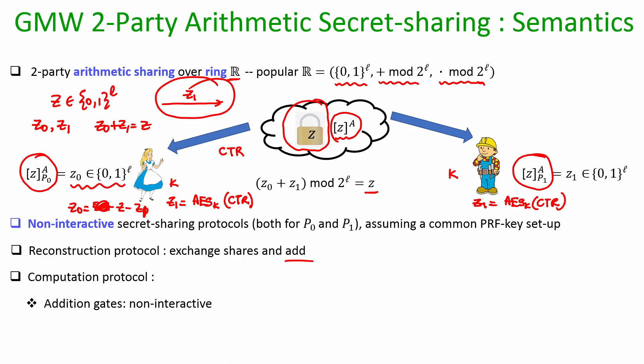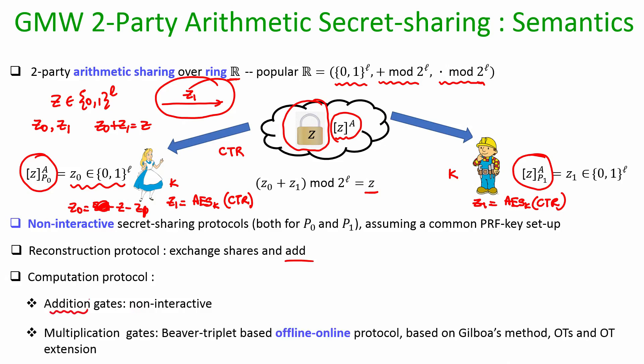For computation protocols in the arithmetic world: if there is an addition gate where the inputs are GMW arithmetic secret shared, to get the gate output in GMW arithmetic sharing the parties require no interaction — they just add their respective shares locally. Multiplication gates can be evaluated using the Beaver triple method in the offline-online paradigm, where triplets are generated in the offline phase based on Gilboa's method using OTs and OT extension.